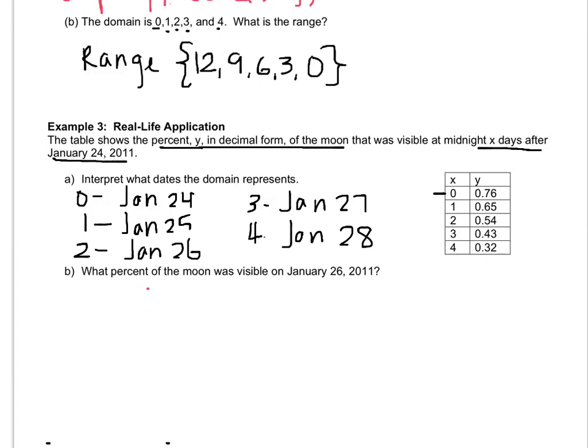What percent of the moon was visible on January 26th? Well, we just discovered that January 26th was when the domain was 2. So that's 54%. 0.54 is 54%. If you have any questions about domain and range or independent and dependent variables, write them down and ask me when you see me next.